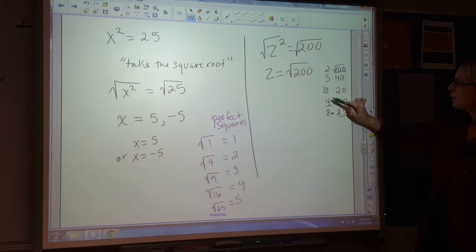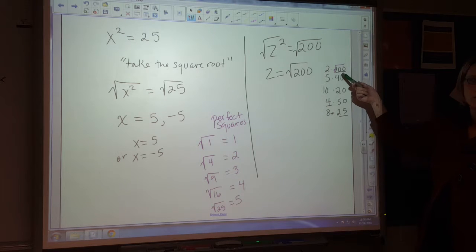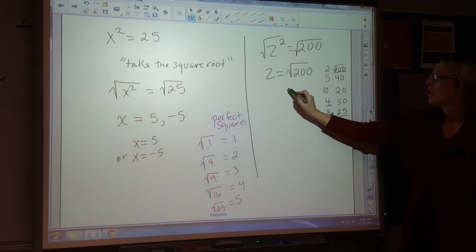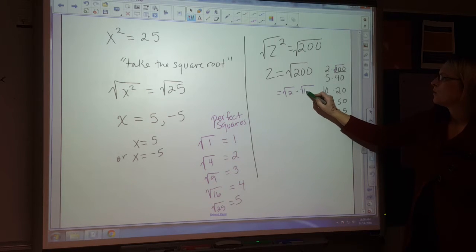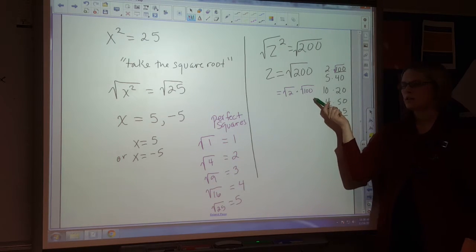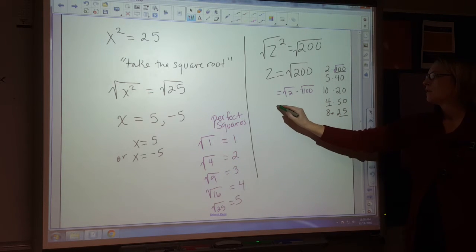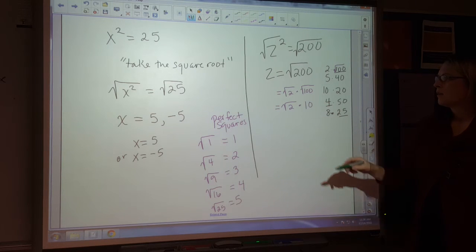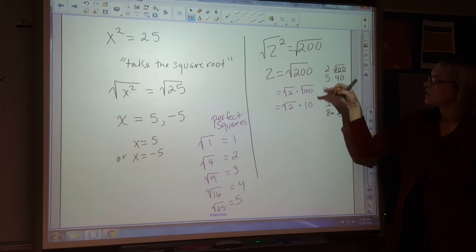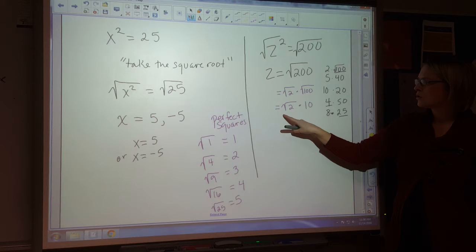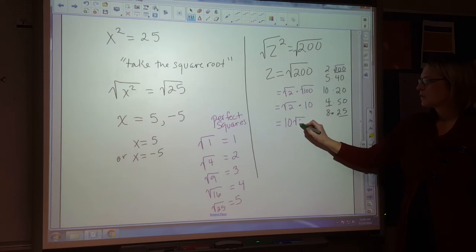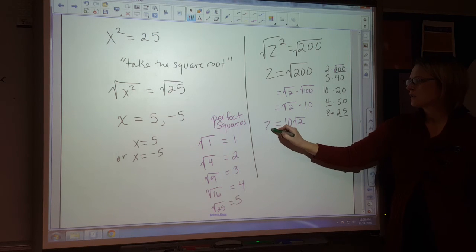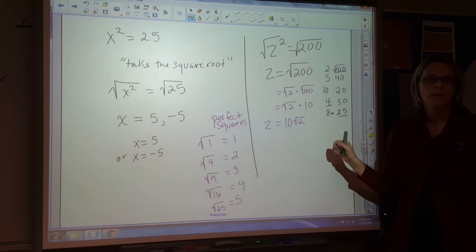So out of 100, 4, and 25, 100 is the biggest one that's a factor of 200. So I could rewrite this as the square root of 2 times the square root of 100. And then what's the square root of 100? 10. So this is equivalent to the square root of 2 times 10. But if you're going to rewrite your answer as a simplified radical, you always put the integer first and the radical last. So I'm just going to rearrange this as 10 square root of 2. So my answer is z equals 10 square root of 2. That would be the simplified answer.